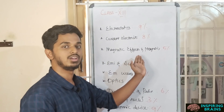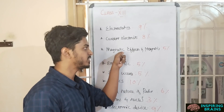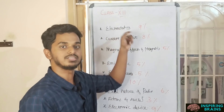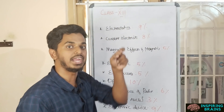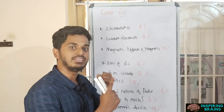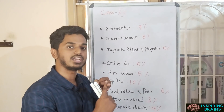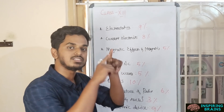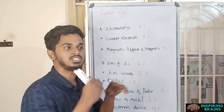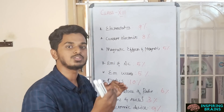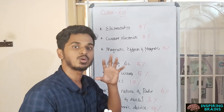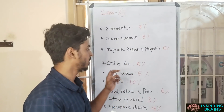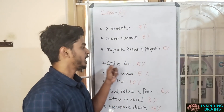Magnetic Effects and Magnetism: if you study Gravitation, you can relate this unit to it. Once you relate Magnetic Effects, you can also relate Electrostatics. It's a triad — Gravitation, Magnetic Effects, and Electrostatics — where just some formulas change but the concept remains the same.